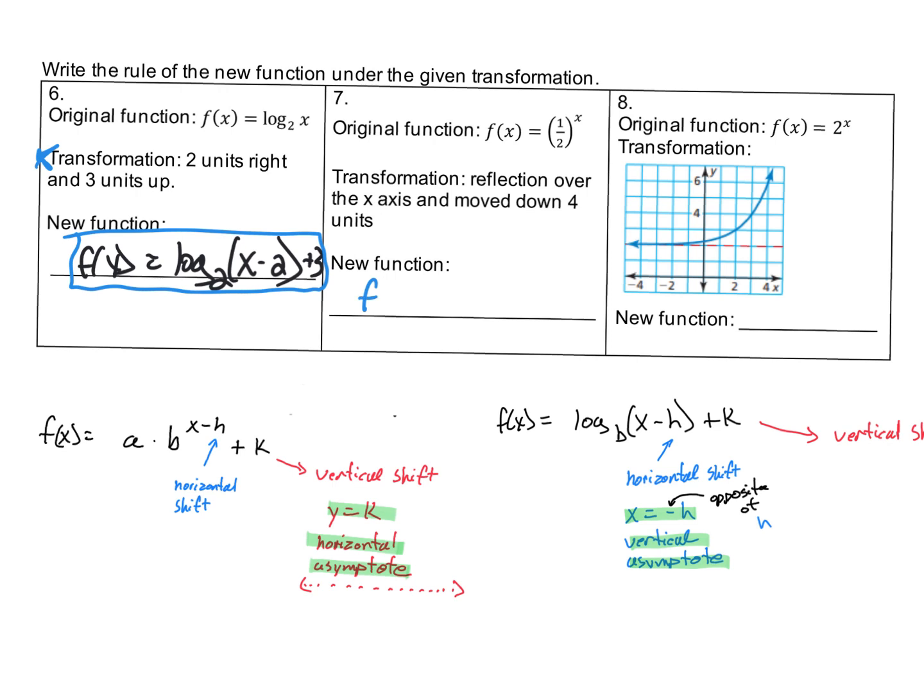So for this one, we have f(x) equals a negative value. The 1/2 doesn't change, but now it's negative (1/2)^x. It doesn't move right or left, but it does move down 4 units. So the plus k is going to be negative 4: f(x) = -(1/2)^x - 4.